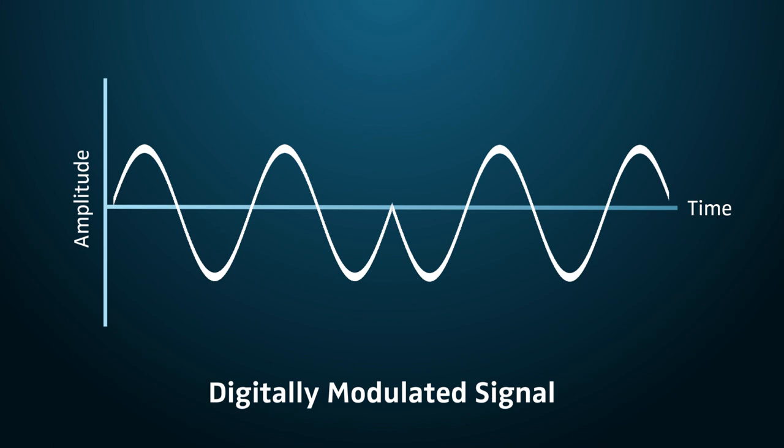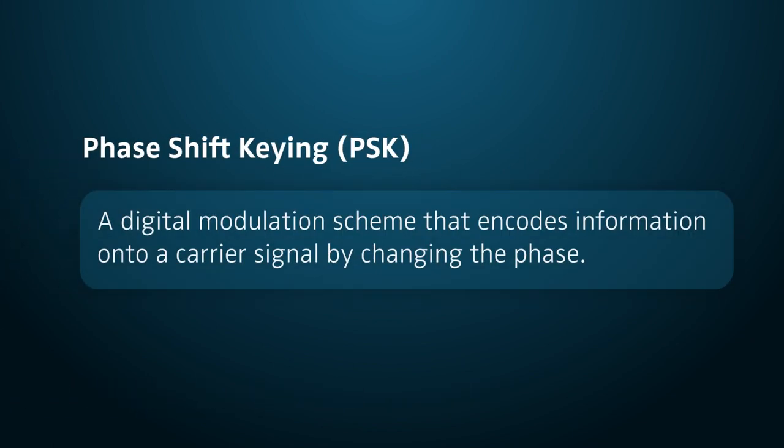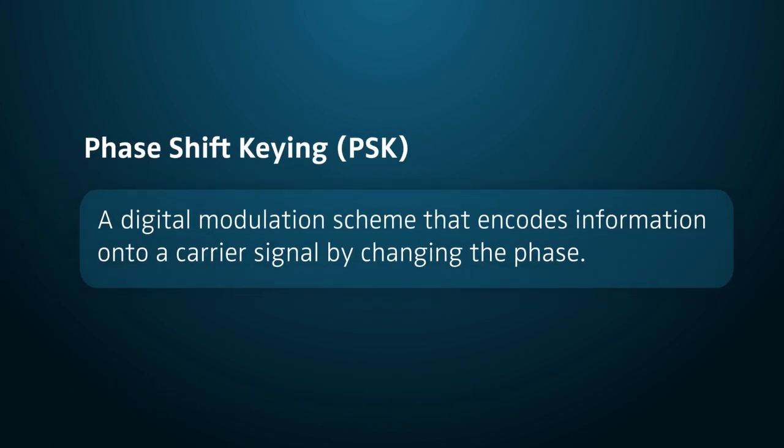There are many ways to change or modulate a carrier signal. For example, phase shift keying, or PSK, encodes information by changing the carrier's phase.